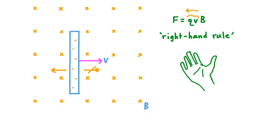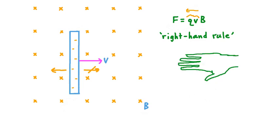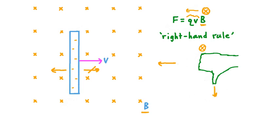Knowing that Q times V points to the left, we arrange our right hand so that our four fingers point in that direction. Our next step is to consider the direction of B, the magnetic field. We've said that in this scenario that field points into the screen, so we curl our fingers in that direction. The last thing we do is point our thumb perpendicular to both of these directions, and when we do that, our thumb points in the direction of the force that acts on these charges.